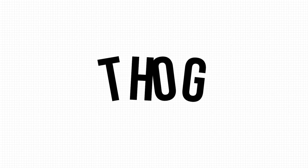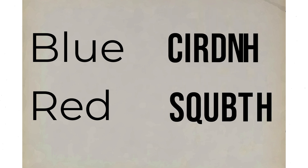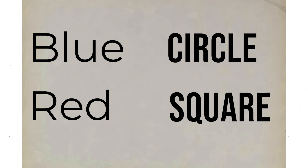In this video I want to introduce the THOG problem. Let's start by introducing the problem first. Here are four shapes: a blue circle, a red circle, a blue square, and a red square. I have written down on a piece of paper the name of exactly one of the colors — either blue or red — and the name of exactly one of the shapes — either a circle or a square.